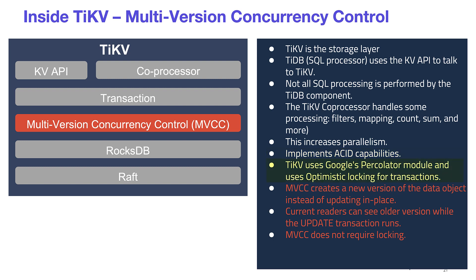TiKV uses Google's Percolator module and optimistic locking for transactions — that's where multi-version concurrency control (MVCC) comes in. Rather than updating data in place, TiDB uses MVCC to create a new version of the data object. Current readers can see older versions while an update transaction runs, using timestamps to track which version is newest. MVCC does not require locking, which means multiple transactions can run without stumbling over each other.